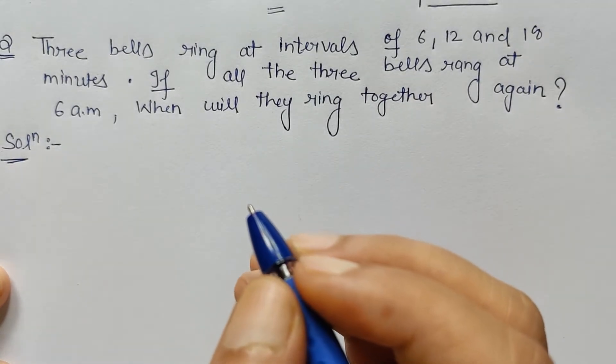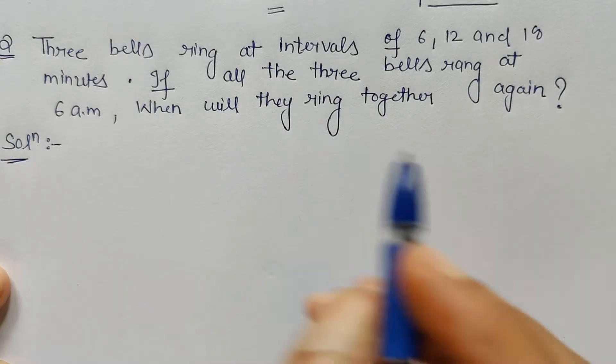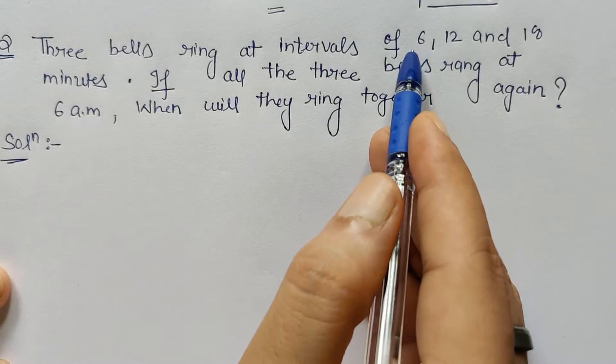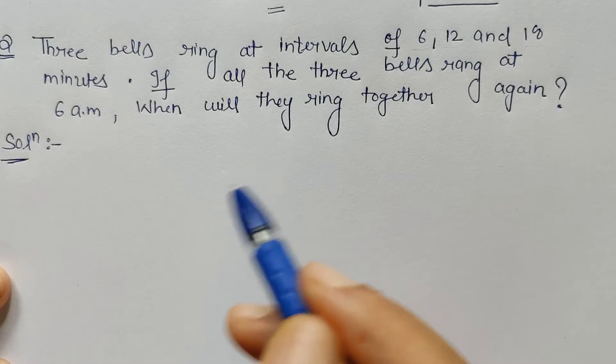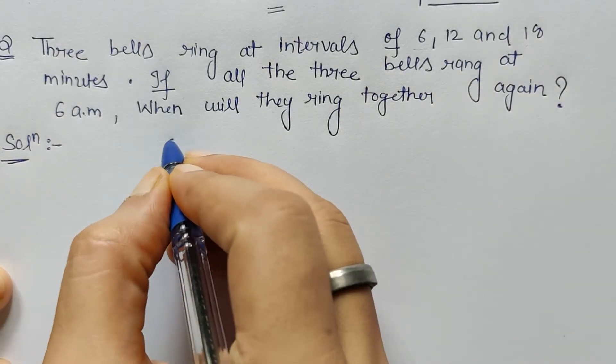It is not about finding something common or equal, right? So we have to just see for these unequal timings when they will ring again. For that we have to find the LCM. Let's find out the LCM.